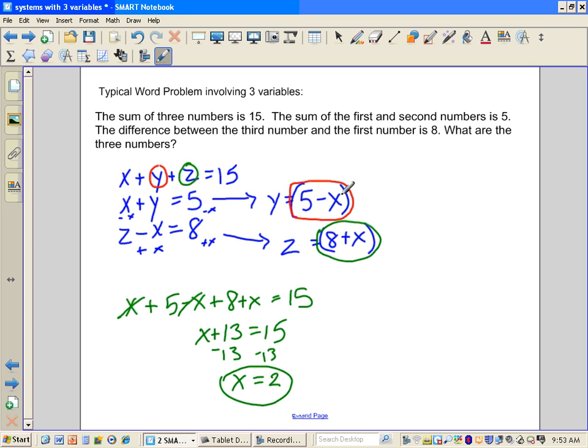Here's our substitution, right back in. What if I put 2 in here? So I have y is equal to 5 minus 2, y equals 3. Plug 2 in here. z is equal to 8 plus x, which is 2. z is equal to 10. So I think we have the solution, 2, 3, and 10 for x, y, and z.